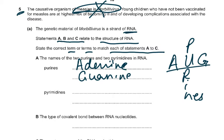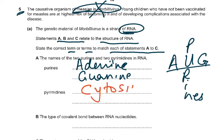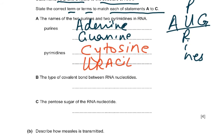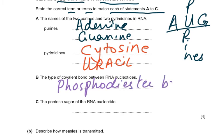Pyrimidines are cytosine and uracil. Please remember we're talking about RNA. A large number of students would write cytosine and thymine because they are careless — they're thinking of DNA, not RNA. So cytosine and uracil. The type of covalent bond between RNA nucleotides is the phosphodiester bond — this is rote learning, you just have to remember it. And the pentose sugar is ribose, not deoxyribose. RNA is ribose; DNA is deoxyribose.